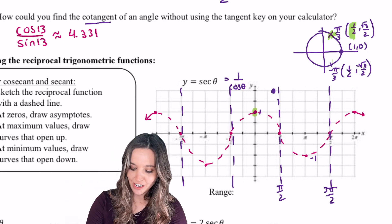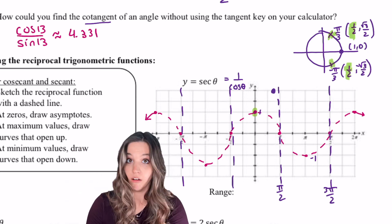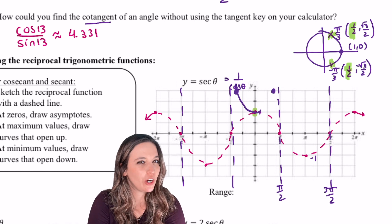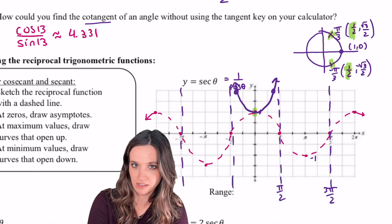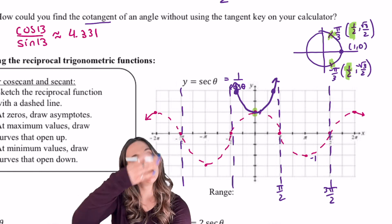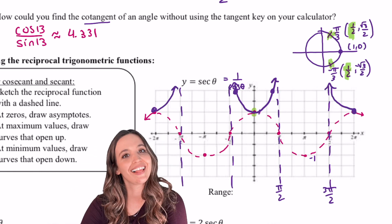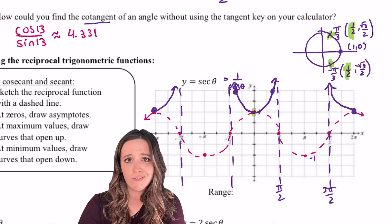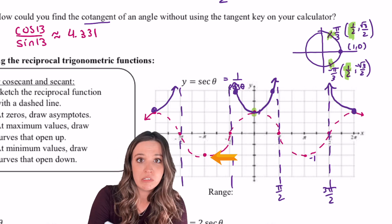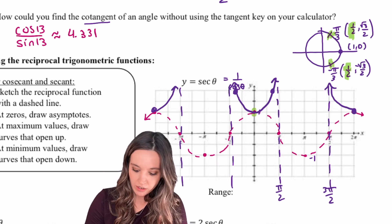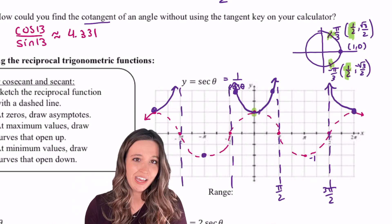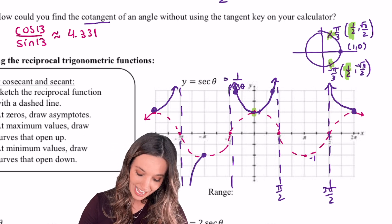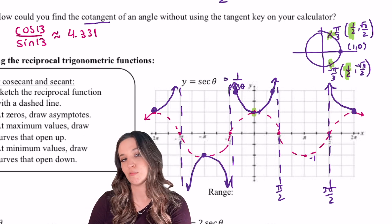Likewise, at negative π/3, cosine is still 1/2. Reciprocal of 1/2, 2. So we see this behavior where at cosine's maxes, secant creates a concave up curve. Likewise, the minimum values, negative π for instance, cosine of negative π is negative 1. Secant then would be 1 over negative 1. So negative 1. So they share that value. And then since secant is the reciprocal function, it creates that downward facing curve at those minimum values.